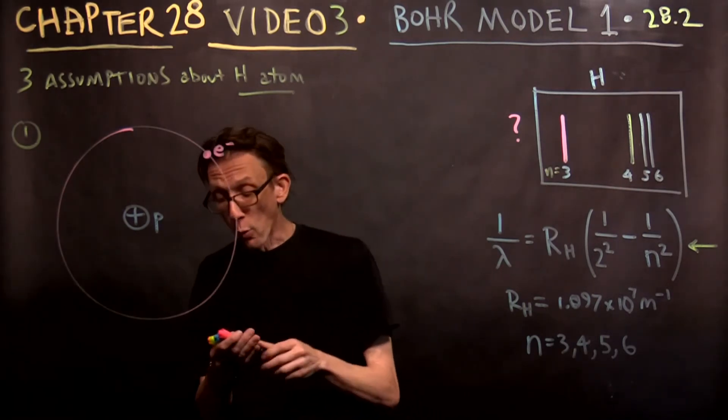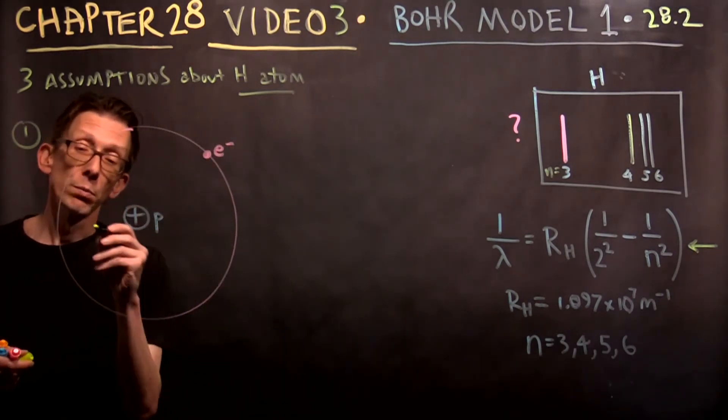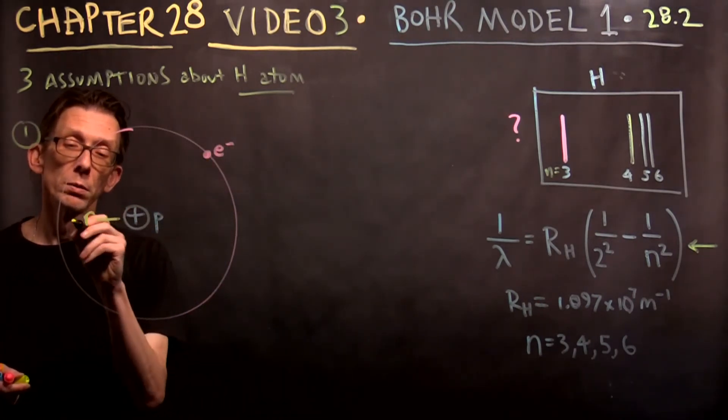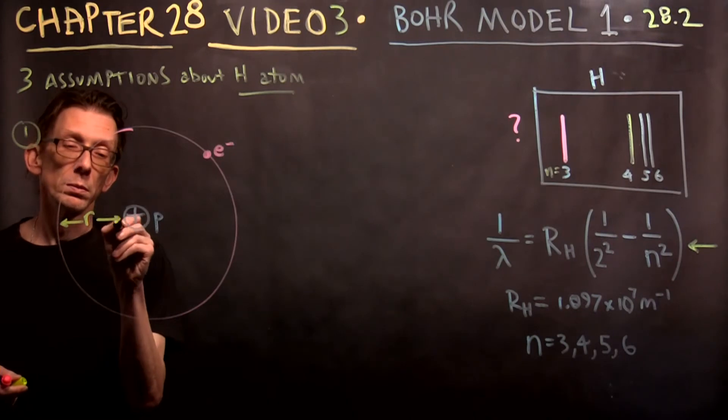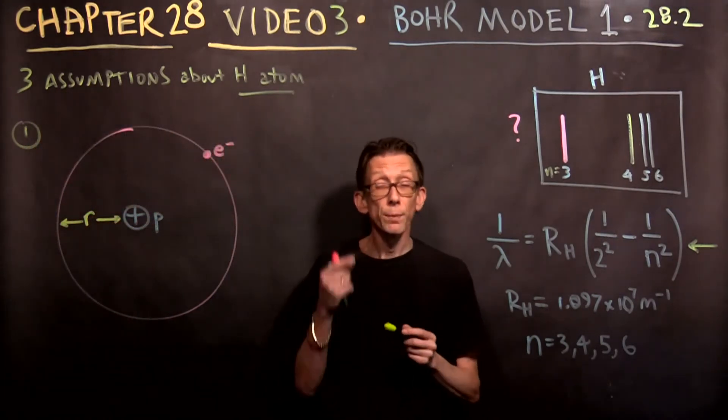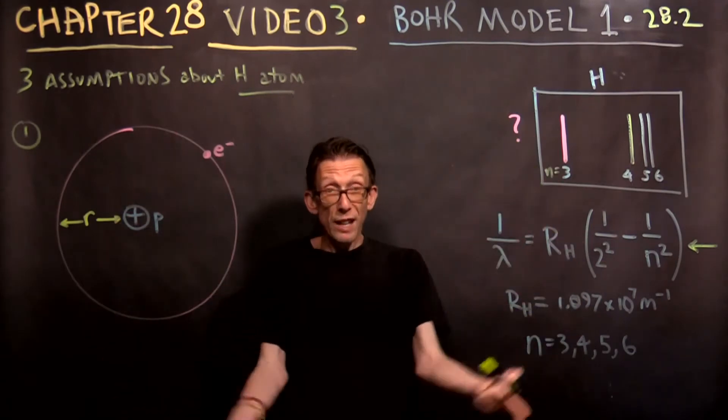And the radius of the atom, believe it or not, he called R. The distance from the proton to the electron is R. Right? The radius of the circle.